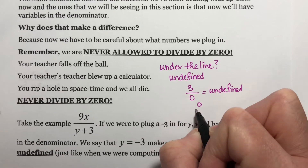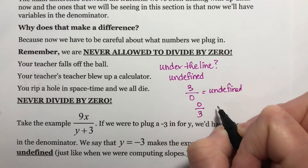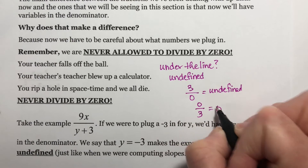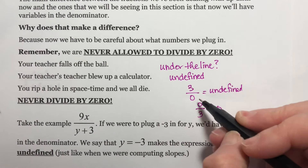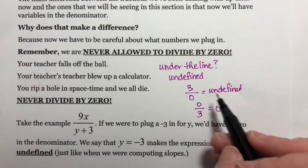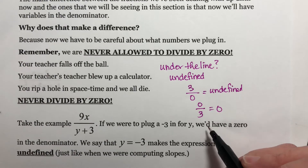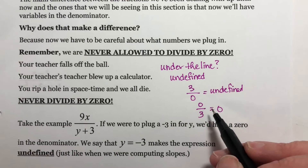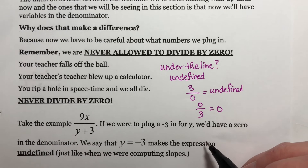But if I have zero over three, this is zero. Three divided by zero is undefined; zero divided by three is zero. We can have a zero on the top, just not on the bottom.